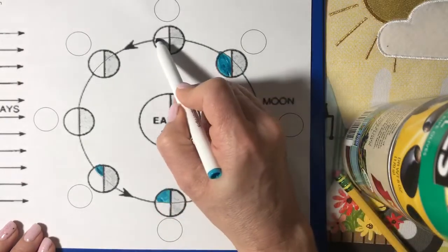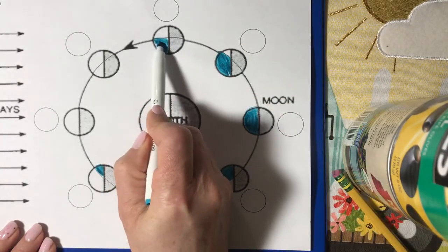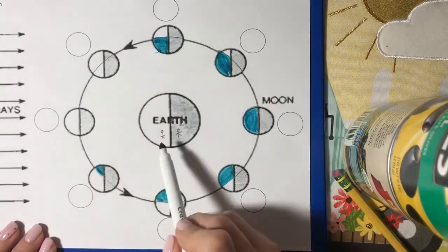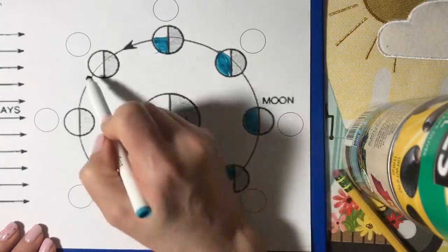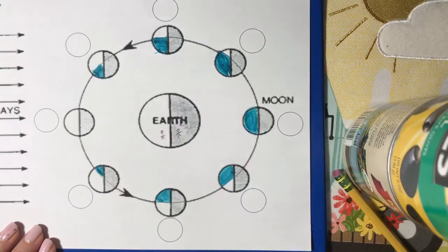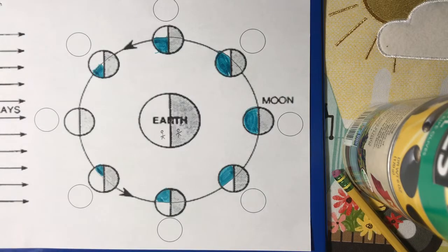At this point, half of the lit portion is visible. Sorry, I'm trying to show you. I'm coloring out of the lines. From the observer to the moon, a tiny bit of the moon is visible. And if I'm over here, none of the moon is visible. We call that the new moon.